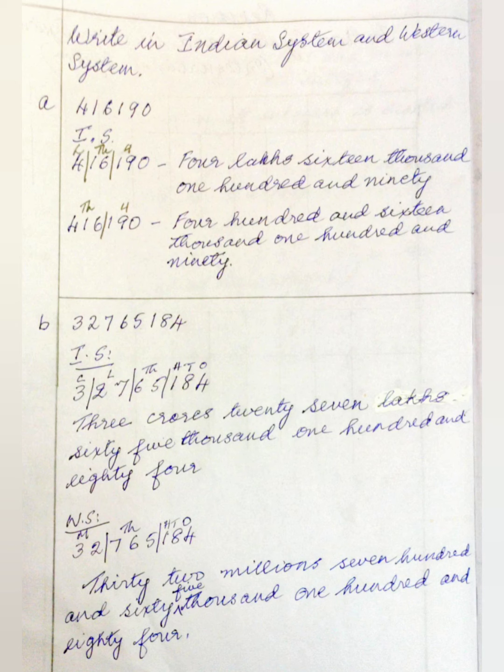Now we are going to write the same number 416190 in the Western system. We mark it as: ones, tens, hundreds | thousands, ten thousands, hundred thousands. So this will read as 416,190.